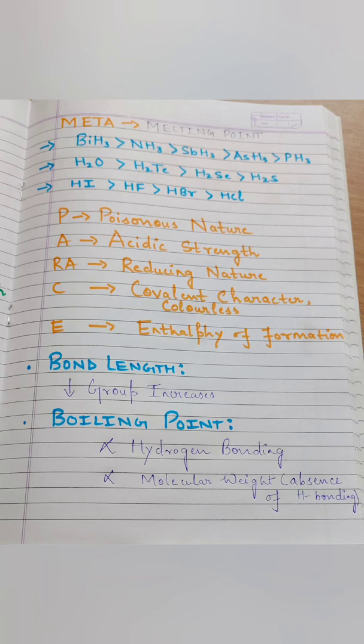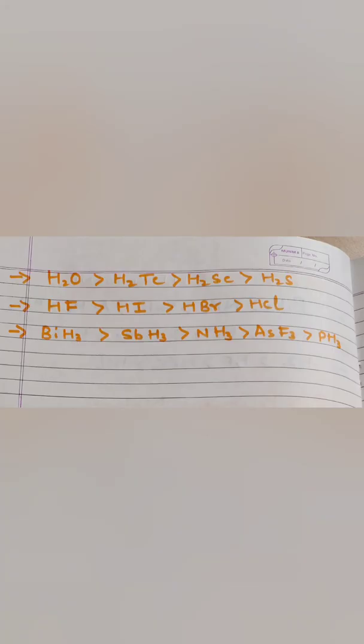Bond length always increases down the group. Next is Boiling point. For boiling point, the trick is: first check for hydrogen bonding — boiling point is always proportional to hydrogen bonding present. If hydrogen bonding is absent, then boiling point is proportional to molecular weight.